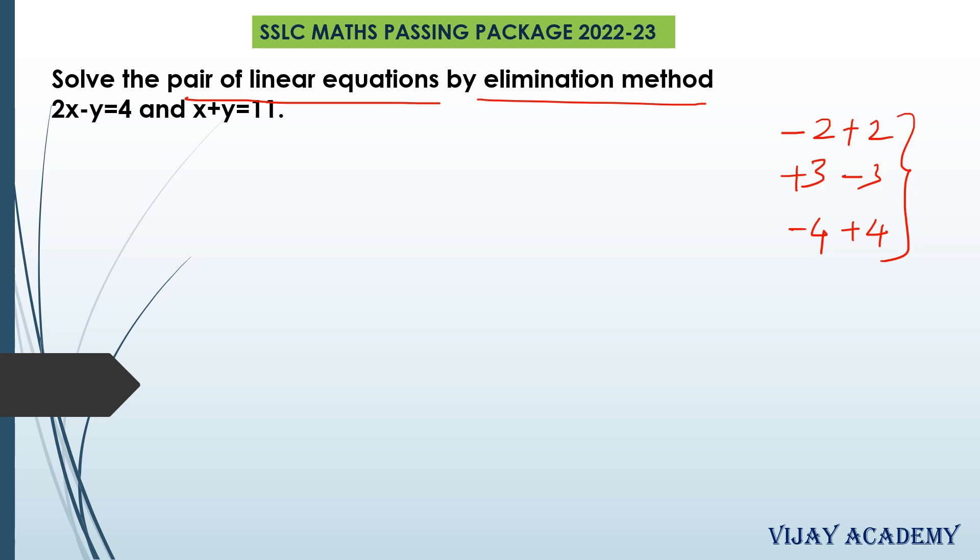So in the first equation, the numerical coefficient of x is 2. In the second equation, it is 1. So they are not zero pairs, so we cannot eliminate x. Now, look at the numerical coefficients of y. In the first equation, it is minus 1. In the second equation, it is plus 1. So minus 1 and plus 1 are zero pairs.